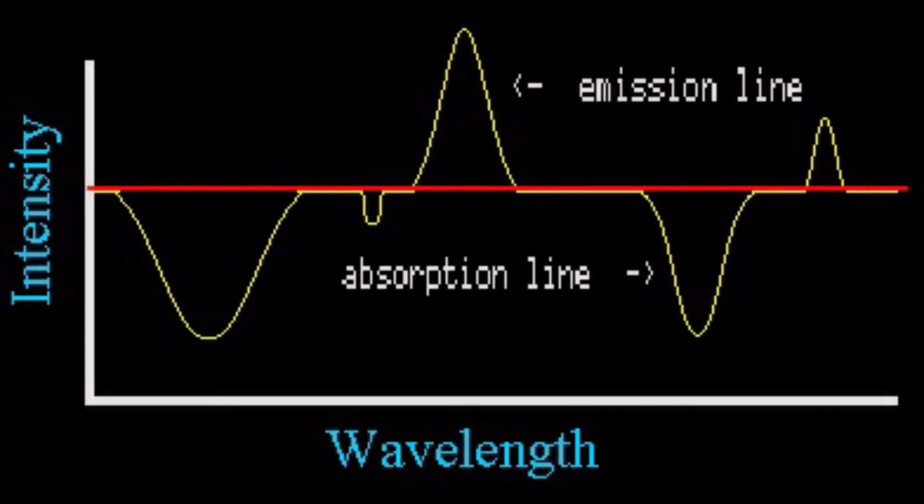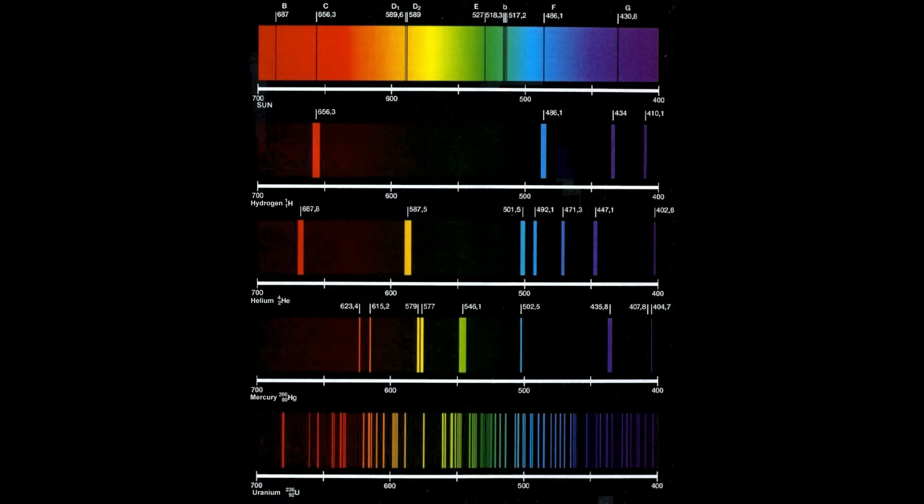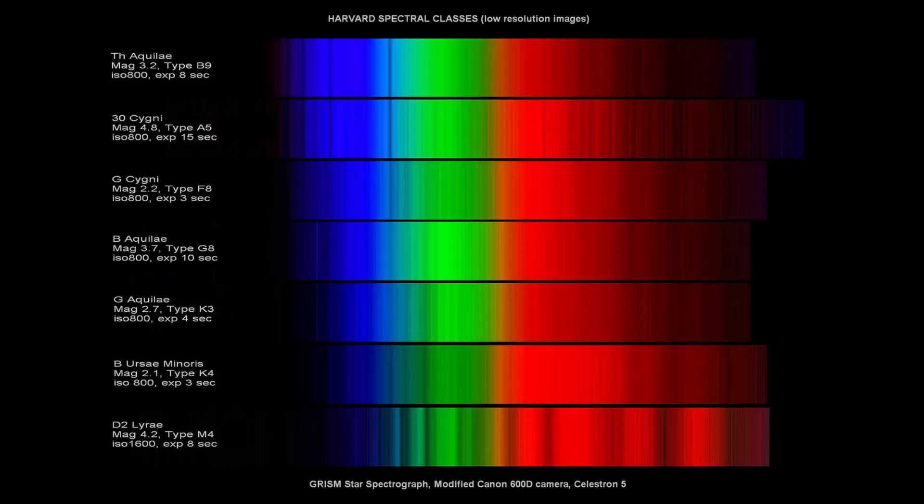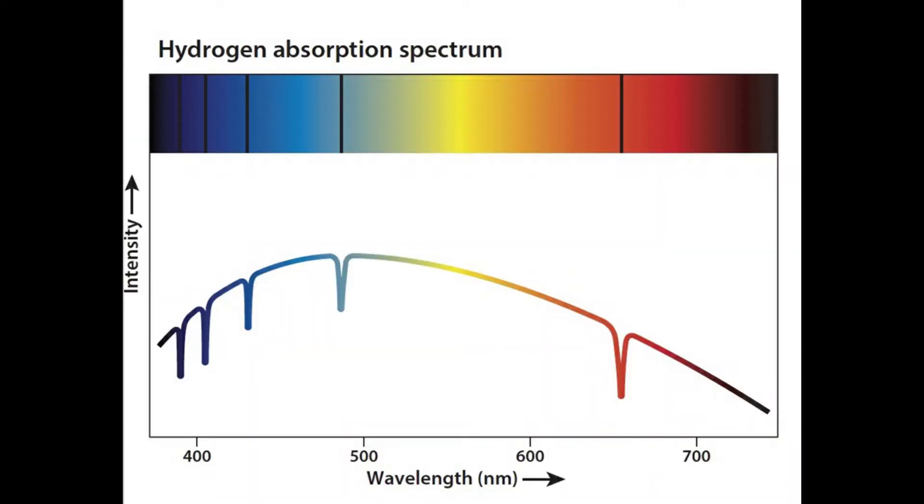An emission line occurs when an electron drops to a lower orbit around the nucleus of an atom and loses energy. An absorption line occurs when electrons move to a higher orbit by absorbing energy. Now, each atom has a unique spacing of orbits and can emit and absorb only certain energies or wavelengths.